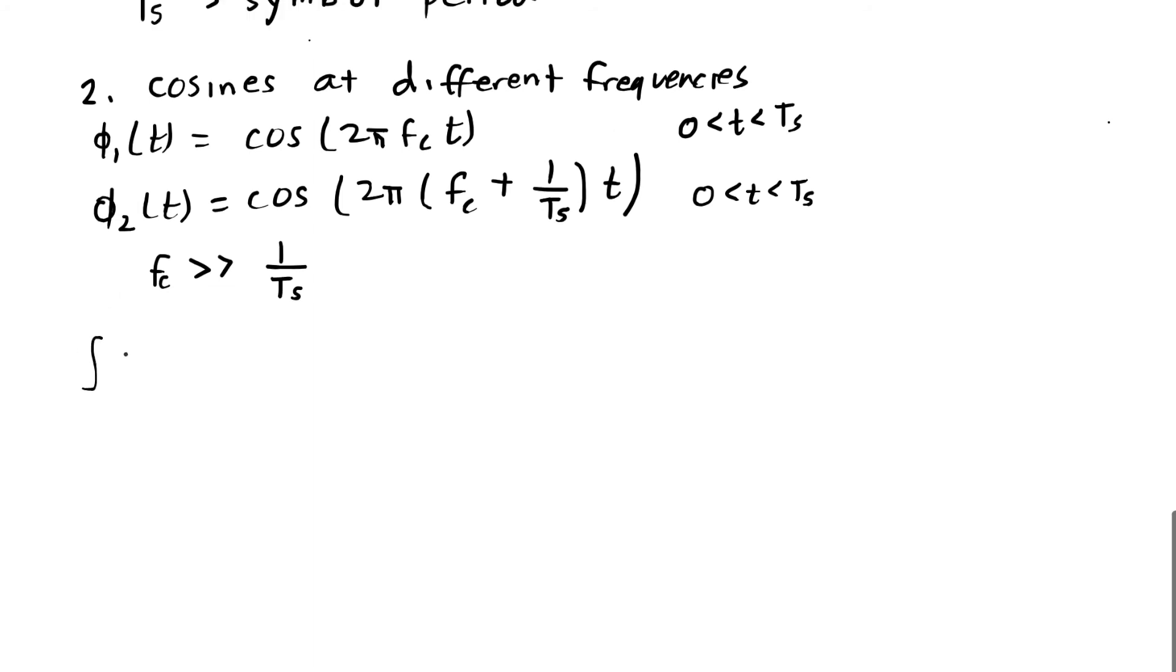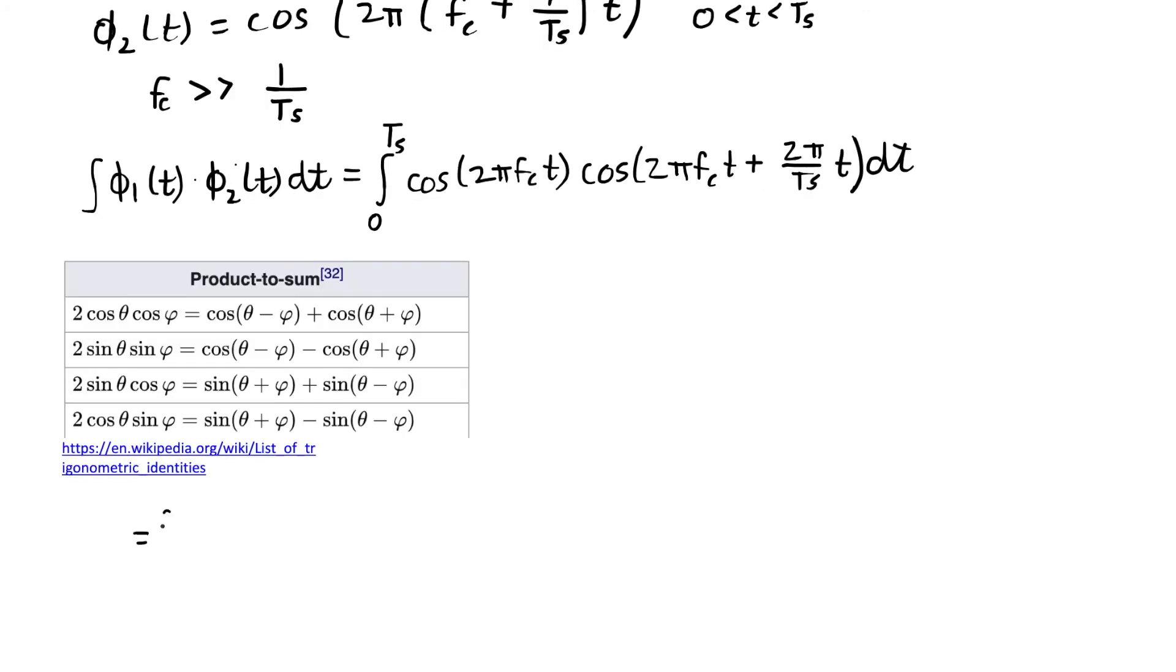So to show orthogonality, we have to take the product of them, multiply them, and show that the integral is 0. Because there's 0 elsewhere, we just make the limits of this integral 0 and TS. And what we need here is our product to sum formulas. And that first one shows that I can take the product of two cosines, represent them as the cosine of the difference plus the cosine of the sum.